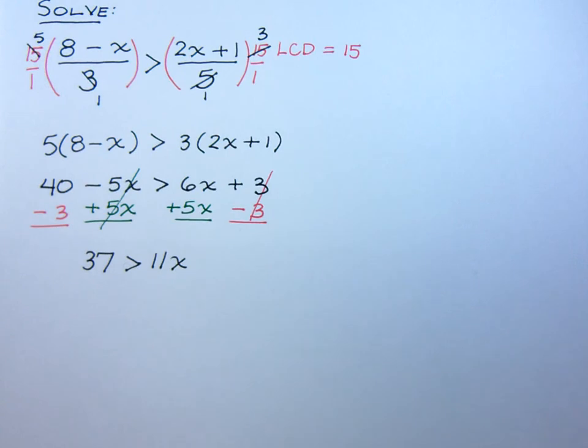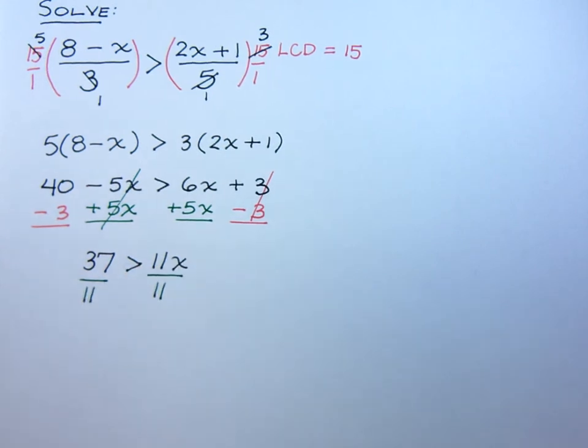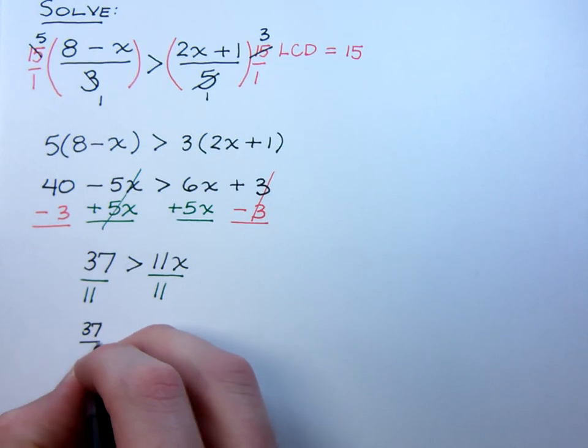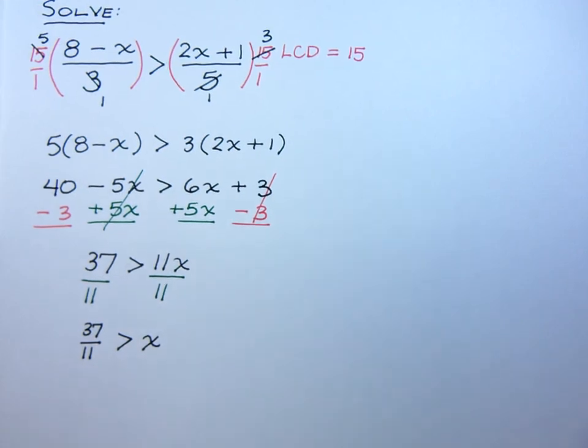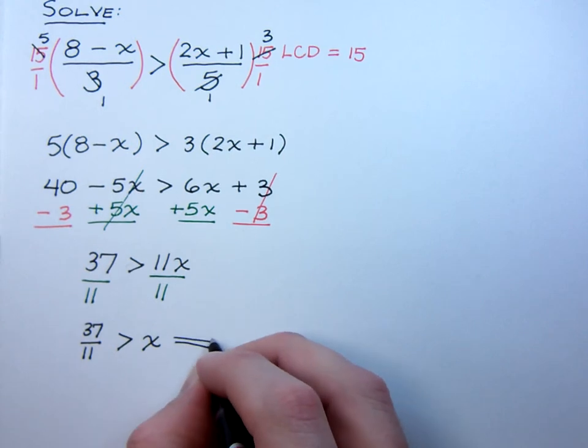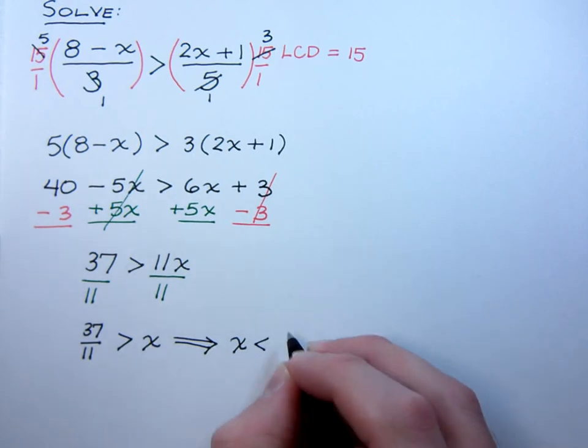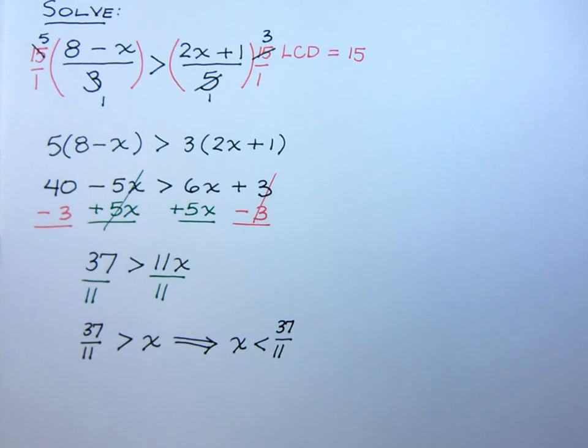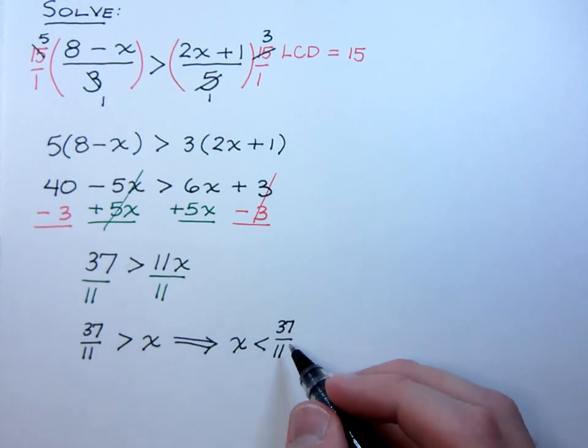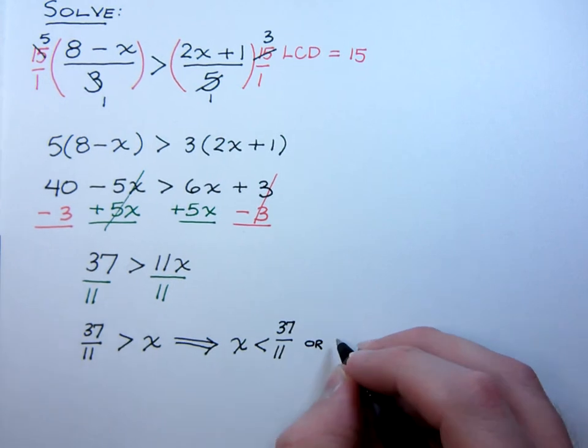And look, we're almost done. We just have to get rid of this coefficient. So we're going to divide both sides by 11. When we do that, we have 37 over 11 is greater than x. Again, if you prefer to write the x first, it's pretty simple. Write the x first. Notice how the inequality is pointing to the x, so it still has to point to the x. So that means that x is less than 37 over 11. Now I know this is not a pretty number. You can try to reduce this if you want to, but I'm okay with the way it is right here. If you absolutely have to make this a mixed number, that's going to be 3 and 4 11ths.